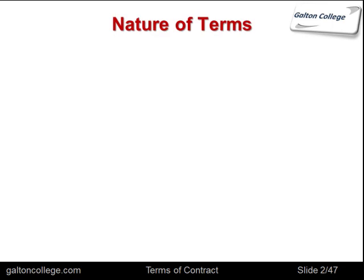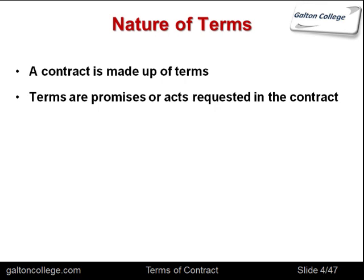Let's start and talk about the nature of terms. A contract is made up of terms — that's what a contract is. It specifies the terms. They are simply promises or acts requested in the contract. That's all a term is. It's written, or it could be unwritten, but generally it could be a written term that specifies what is required in the contract. It could also be implied and may not be in paper form.